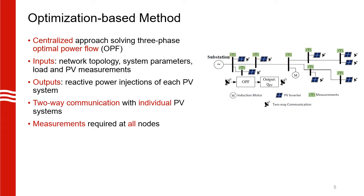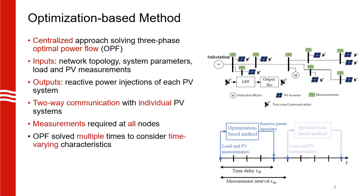Once all this information is communicated to the centralized control, we solve the OPF problem to get the reactive power injections. We then need to communicate these injections back to individual PV systems, so this strategy requires an extensive two-way communication infrastructure. We also need to consider the time-varying characteristics of distribution grids since solar PV injections vary a lot throughout the day. To account for this, we solve the OPF multiple times throughout the day.